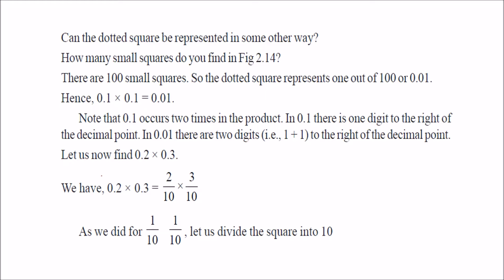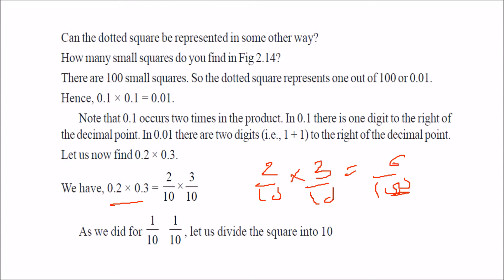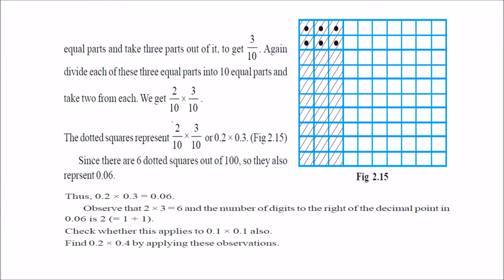I can take one more example: 0.2 into 0.3. 0.2 can be treated as 2 by 10, and 0.3 can be treated as 3 by 10. This will be equal to 6 by 100. Because there are two zeros, one value here and one value here, then 0 — giving 0.06. This is taking a fractional value of a fraction, so you have to have some decimal values.